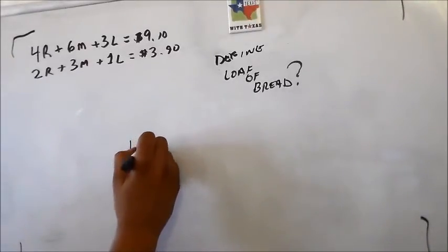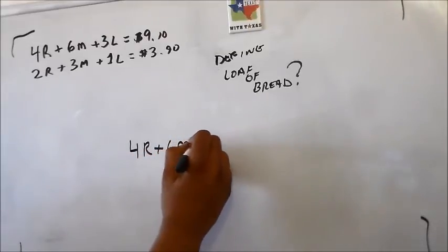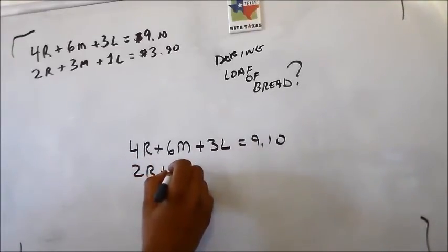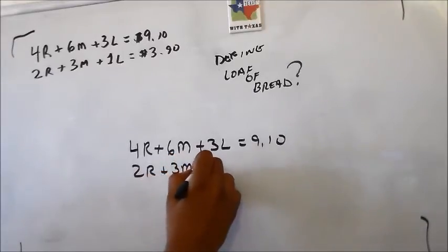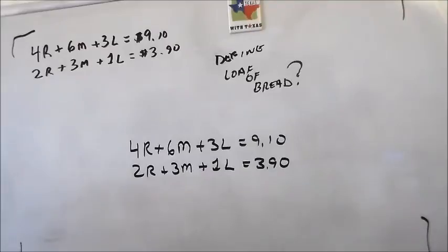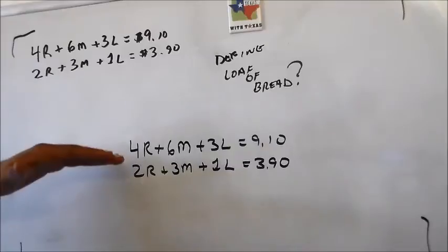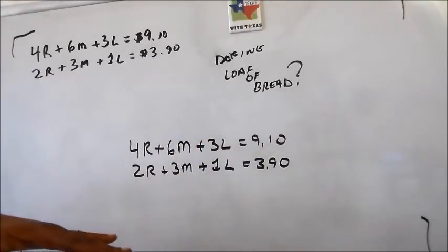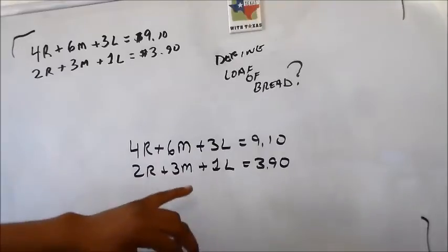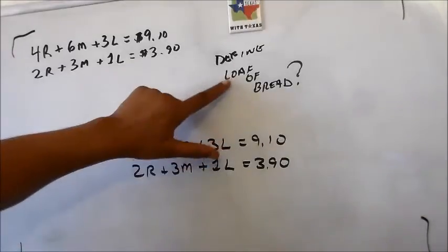I really like the substitution and isolation method. Looking at the two equations, I notice that two is half of four, three is half of six, and one loaf is two less than three loaves. That's useful because I want to isolate and define the cost of a loaf of bread.